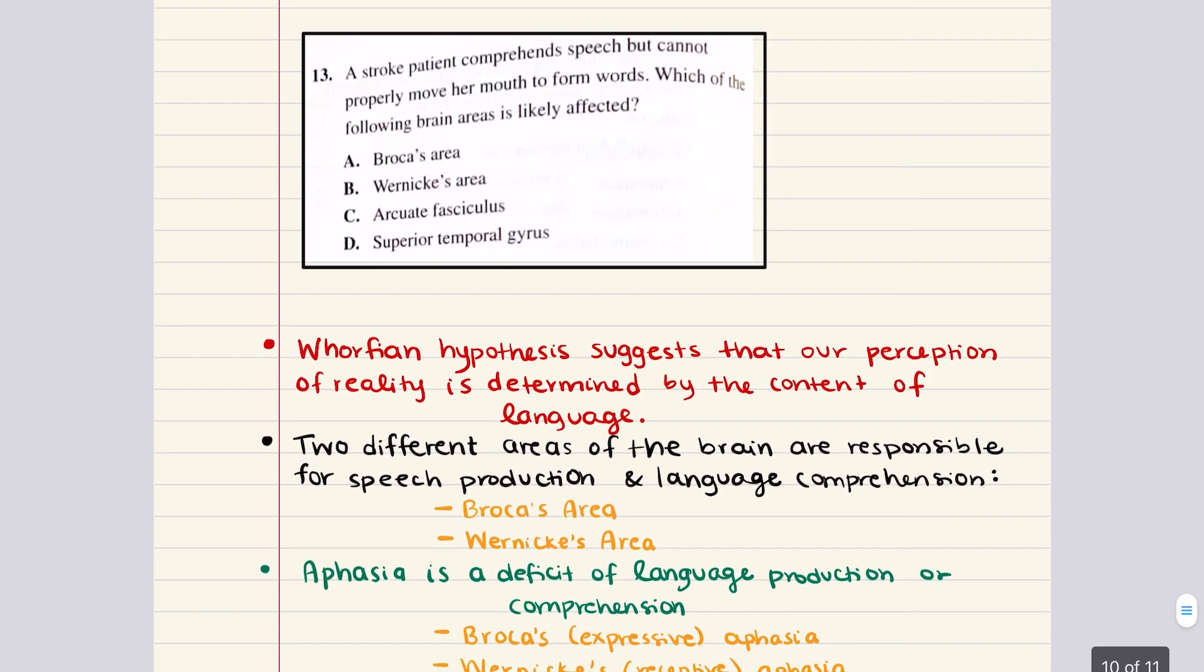Problem 13 says a stroke patient comprehends speech but cannot properly move her mouth to form words. Which of the following brain areas is likely affected? Let's review different parts of the brain and what they affect in terms of language. Broca's area governs the motor function of language. So a stroke that affects Broca's area is going to leave receptive language intact, but word formation will be affected. This exactly aligns with what this patient is going through.